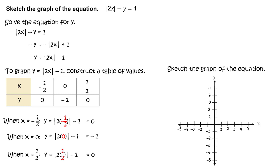Now you're ready to sketch the graph of the equation. First, plot the points negative 1/2, 0; then 0, negative 1; and 1/2, 0. To sketch the graph of the equation, the absolute value of 2x minus y equals 1, draw a curve through the plotted points.